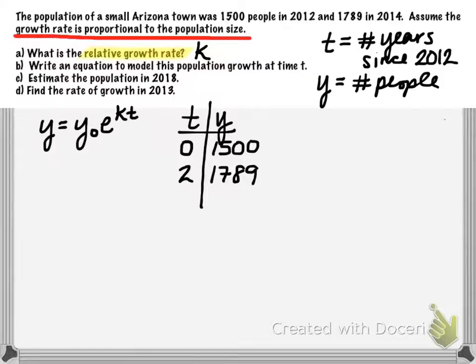We can use these two ordered pairs to allow us to write our model. So first we need to determine our y sub 0. That's going to be the population at time 0. And we're given that. We know that's 1,500. So that'll be substituted in for y sub 0.